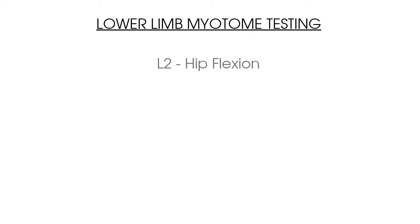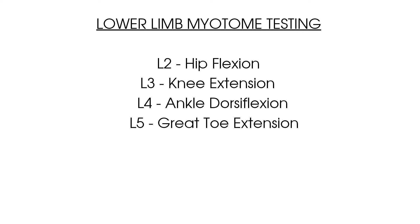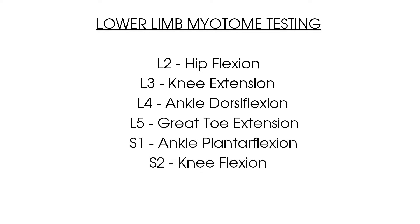To summarise this video on the myotomes of the lumbar spine and the lower limb: L2 is for hip flexion, L3 is for knee extension, L4 is for ankle dorsiflexion, L5 is for first digit extension, S1 is for ankle plantar flexion, and S2 is for knee flexion. For each myotome, compare the right and left sides and measure the strength elicited on the Oxford scale between 0 and 5. Remember that you are looking for a profound weakness at each particular myotome as a sign of potential neurological deficit.